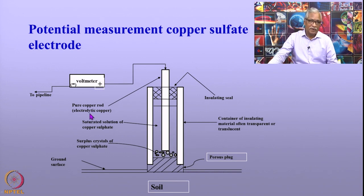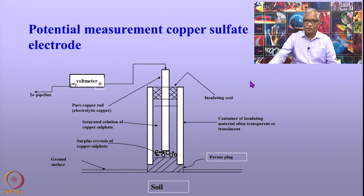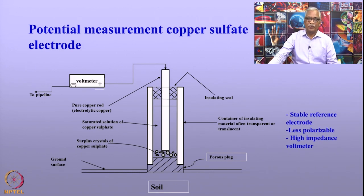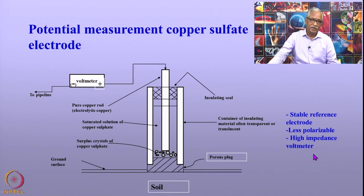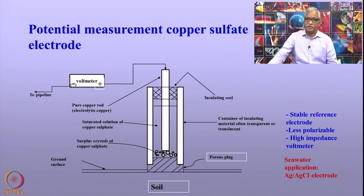The reference electrode is connected to the pipeline through a voltmeter: the positive terminal of the voltmeter connects to the reference electrode and the negative terminal connects to the pipeline. The reference electrode should be stable, should not disintegrate, and should be less polarizable — meaning small current passing during measurement should not alter its potential. To minimize this current, a high-impedance voltmeter is used. Silver/silver chloride electrodes can also be used, mostly for seawater applications.